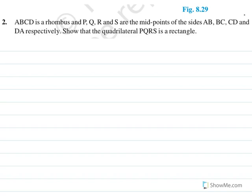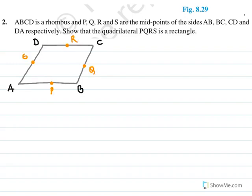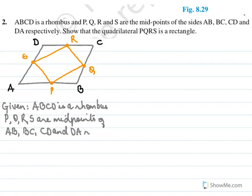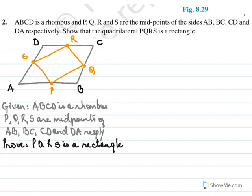PQRS are points on the sides AB, BC, CD, and DA of rhombus ABCD respectively. Show that the quadrilateral PQRS is a rectangle. So here ABCD is a rhombus with midpoints P, Q, R, S and we need to show that PQRS is a rectangle — the inner quadrilateral is a rectangle.